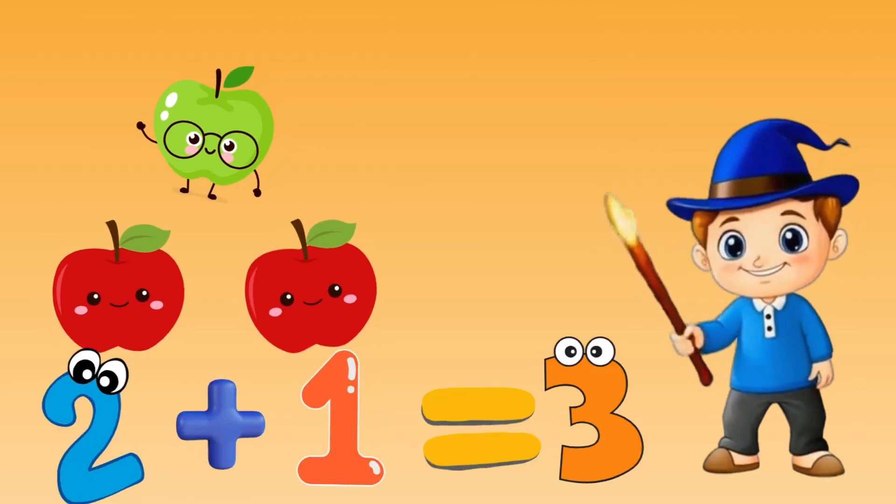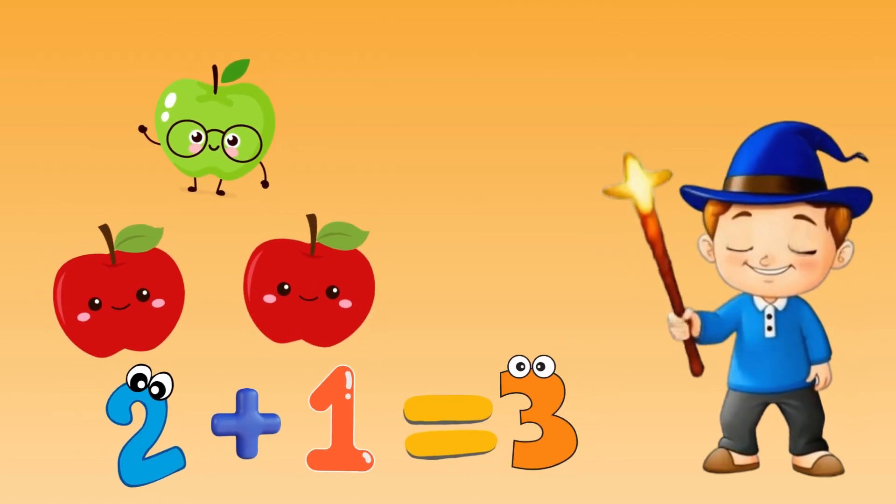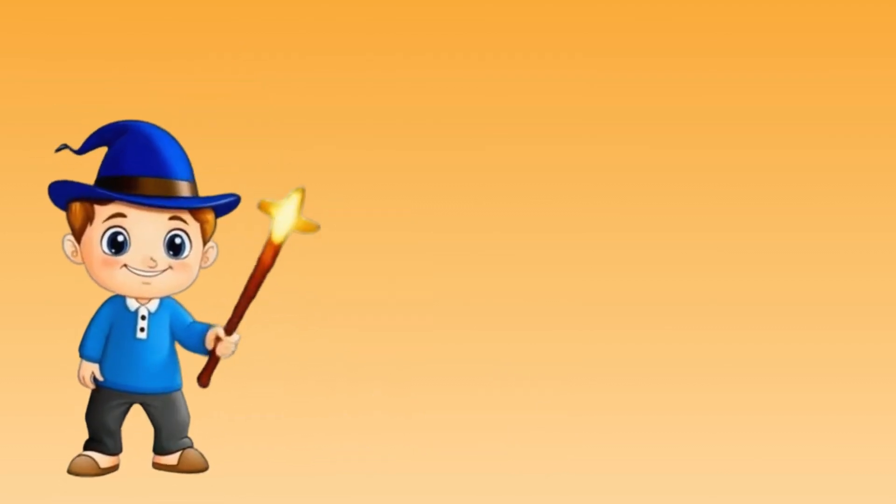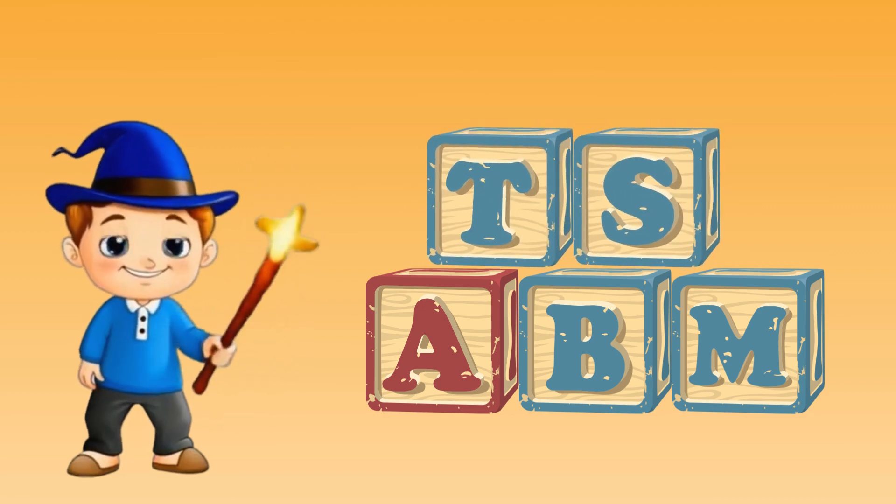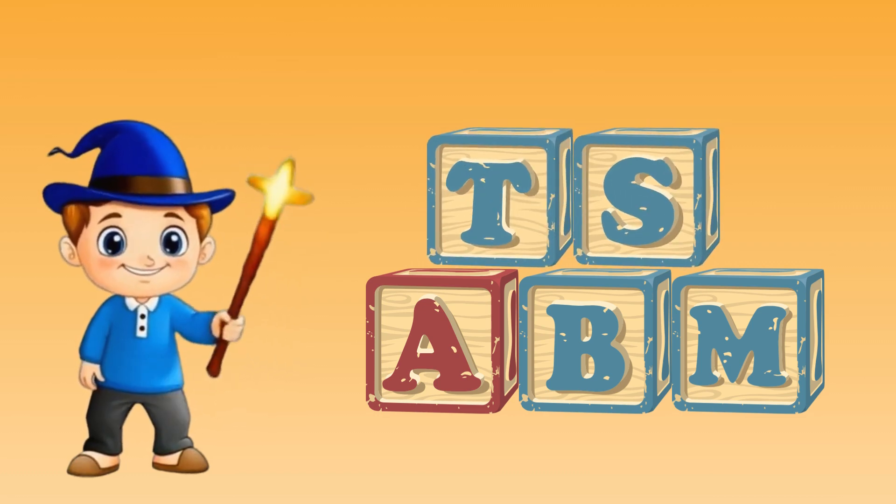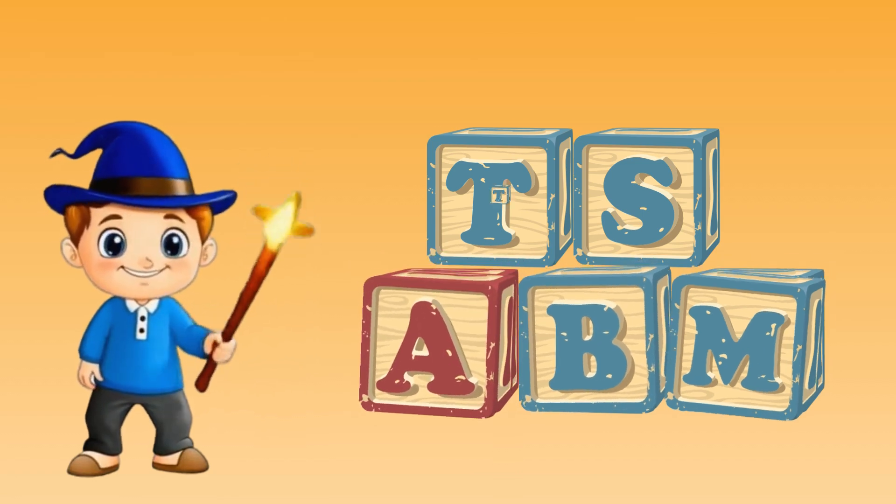That's right! Two plus one equals three apples. Now let's build with blocks. I have three blocks and I add two more blocks. Let's count them all: one, two, three, four, five.